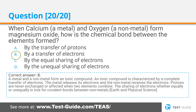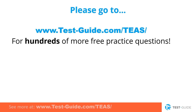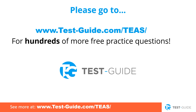The correct answer is B. A metal and a nonmetal form an ionic compound. An ionic compound is characterized by a complete transfer of electrons. The metal releases its electrons and the nonmetal receives the electrons. Protons are never exchanged or affected when two elements combine. The sharing of electrons, whether equally or unequally, is true for covalent bonds between nonmetals. Please go to www.testguide.com/tease for hundreds of more free practice test questions.